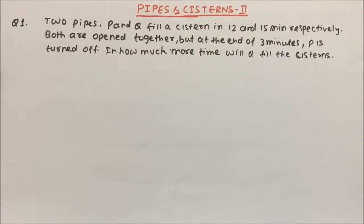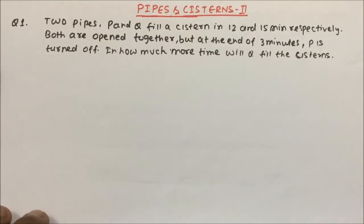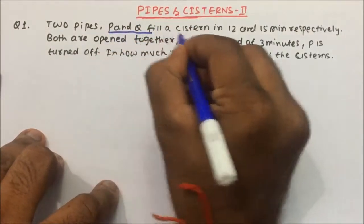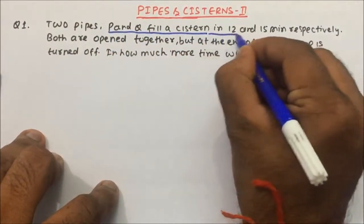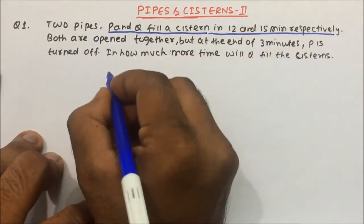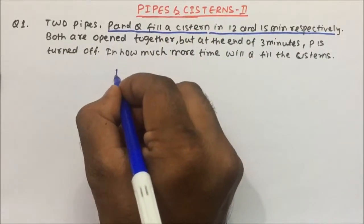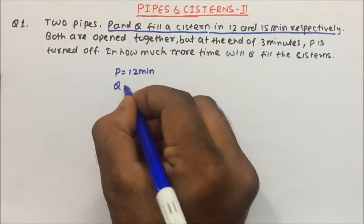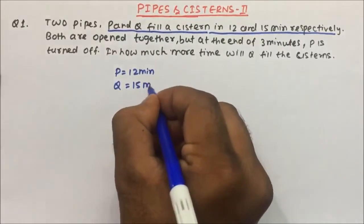Hi friends, this is Pipe and System video Part 2. In this video we are going to see some important questions which will frequently come in exams. The first question: two pipes P and Q fill a cistern in 12 minutes and 15 minutes respectively. So P takes 12 minutes and Q takes 15 minutes to fill a tank.